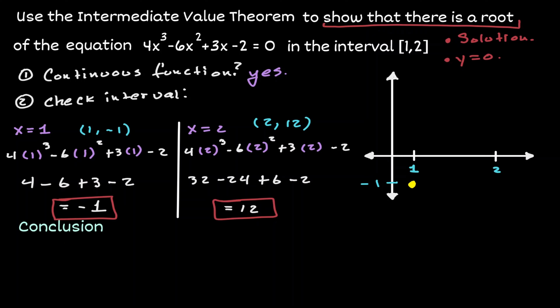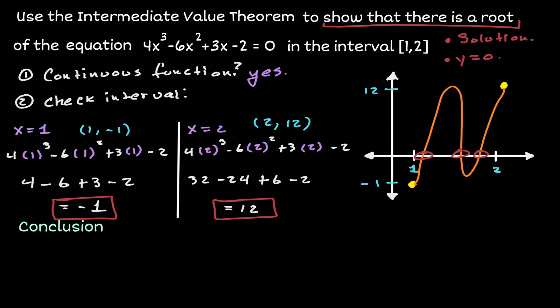Let's estimate that on the graph on the right. Now remember that we are working with a continuous function. So if we connect the coordinate points (1, −1) and (2, 12), we should be able to connect them without any holes or gaps. Notice that when we try to connect them, we are guaranteed to pass through the y value of 0. We do not know the shape of this connection, but we know one thing for sure — we are guaranteed to pass through y equals 0, at least one time, regardless of the scenario we consider.